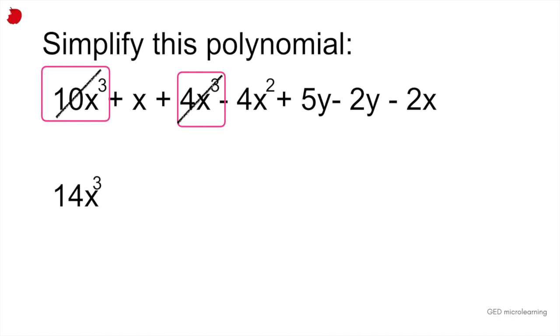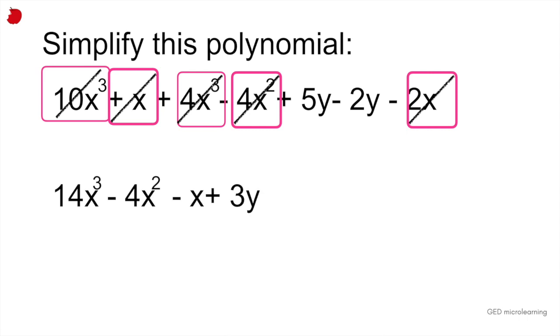Let's start with common terms. Let's start with the x to the third power, which we said was going to be 14x to the third. So we've done that. Let's get rid of it. Next, let's look at numbers that are x squared. And you can see that we only have one. So we now have minus 4x squared. Let's get rid of that. Now let's look at the numbers that have an x. So we have a plus x and we have a minus 2x. That would give us a negative x. Get rid of those. And all we have left is that 5y minus 2y, which would give us 3y.